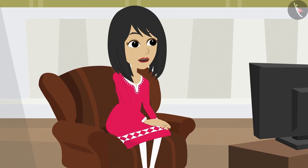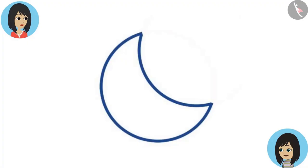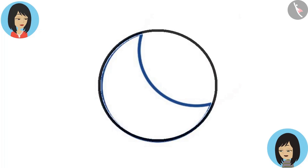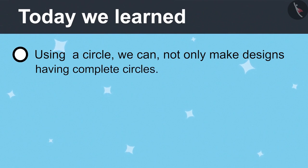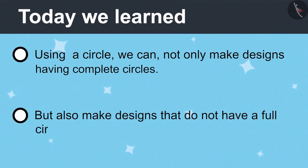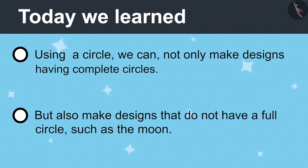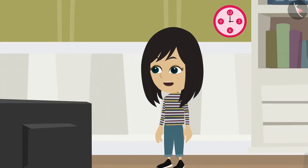You have become very intelligent. Thank you. You see that no full circle is visible in this shape, yet it is a shape made from a circle. This means using a circle, we cannot only make designs having complete circles like rangoli, but also make designs that do not have a full circle, such as the moon. Tomorrow, Vandana and I will together try to find designs made with many circles.